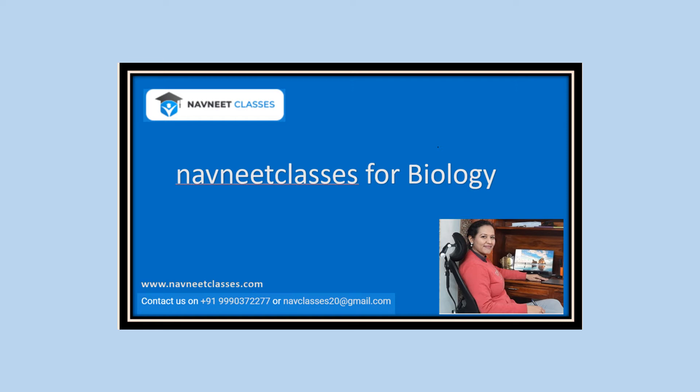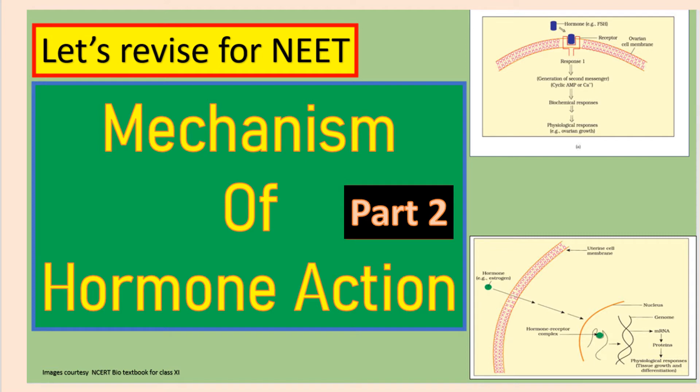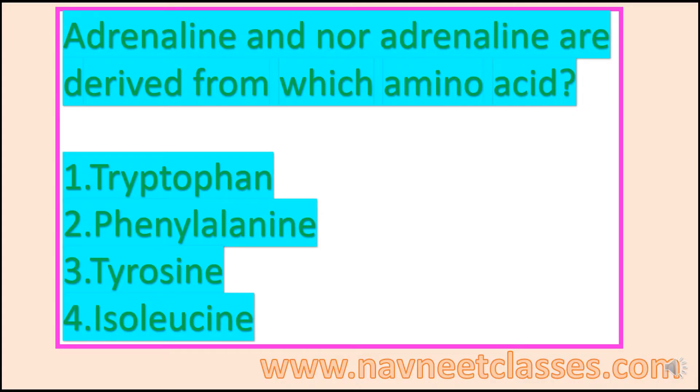Hi students, welcome to mechanism of hormone action part 2. Before I start, in the last video I had asked you: adrenaline and noradrenaline are derived from which amino acid? Tryptophan, phenylalanine, tyrosine, or isoleucine? The correct answer is tyrosine.